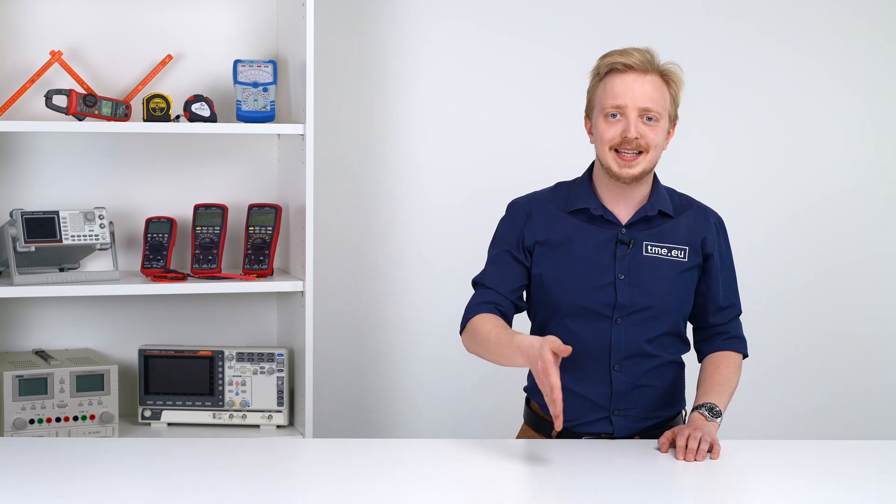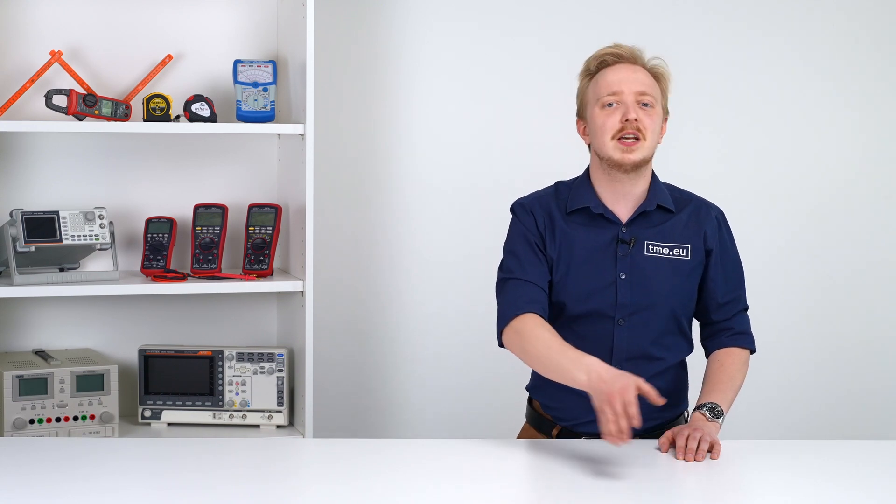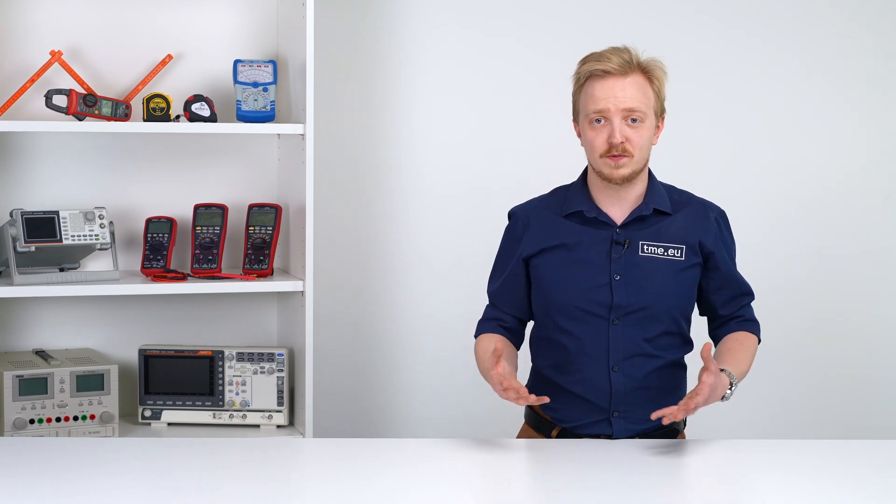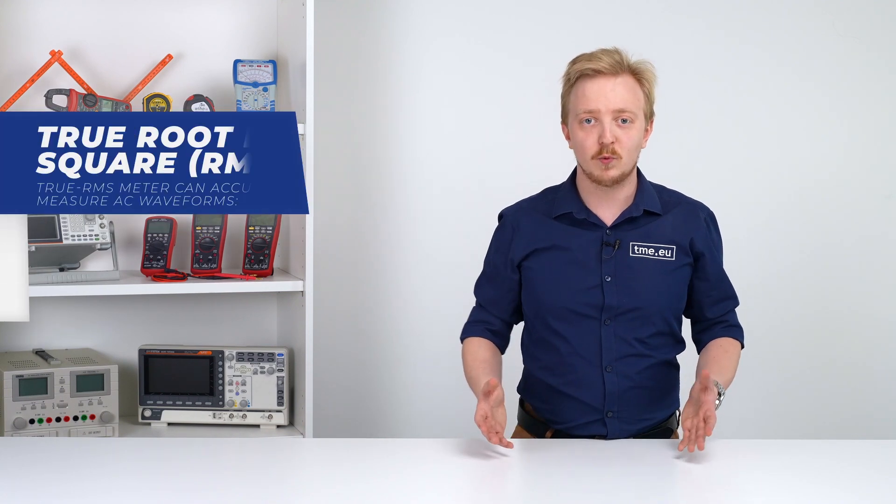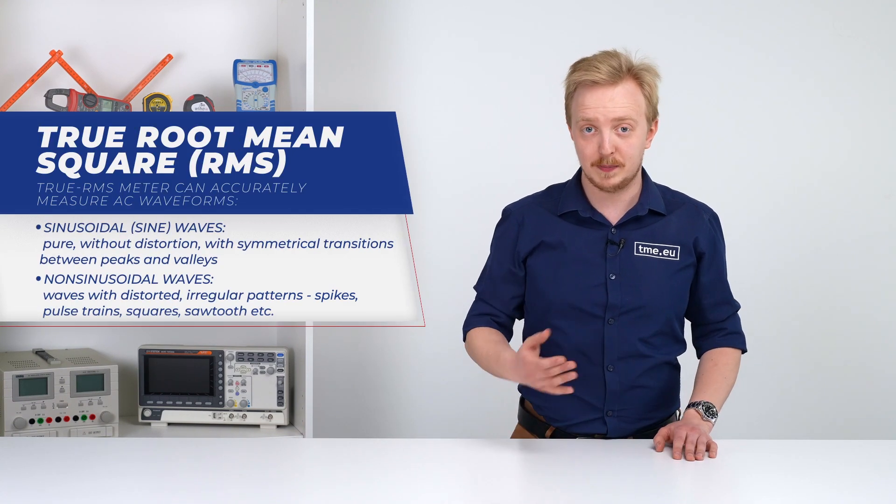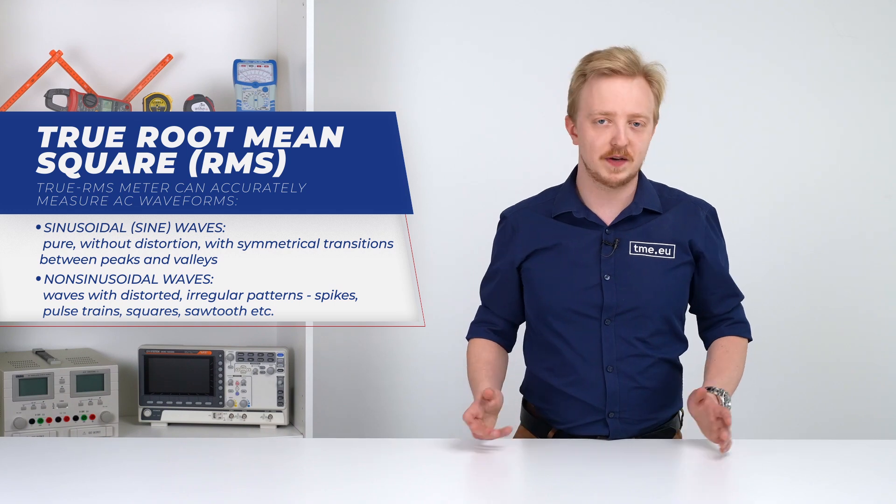It's good to choose the model that is within your budget but has all the functions you need. Some features can be more or less useful for you like hold function or backlight. Additionally, you can get one with true root mean square, which is important for correct measurements of AC voltage.